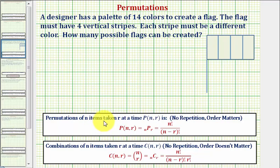If the order matters, then we're talking about a permutation. If the order doesn't matter, then we're talking about a combination.